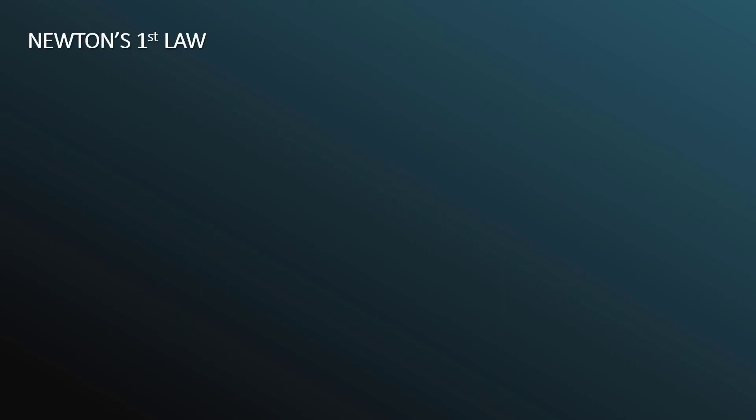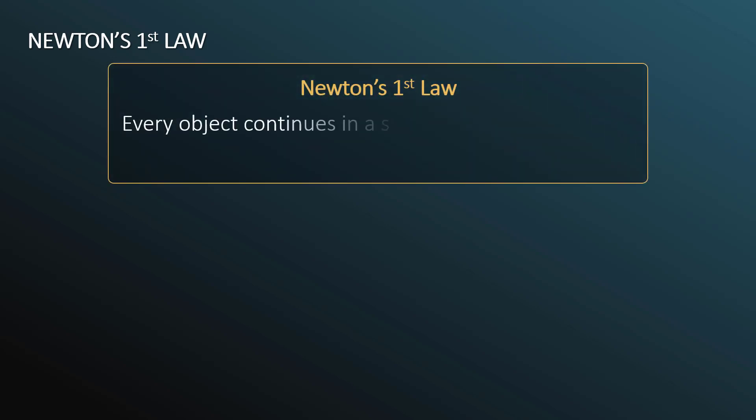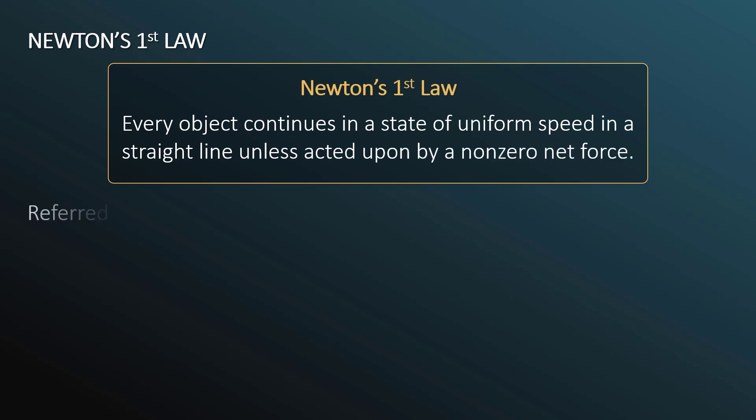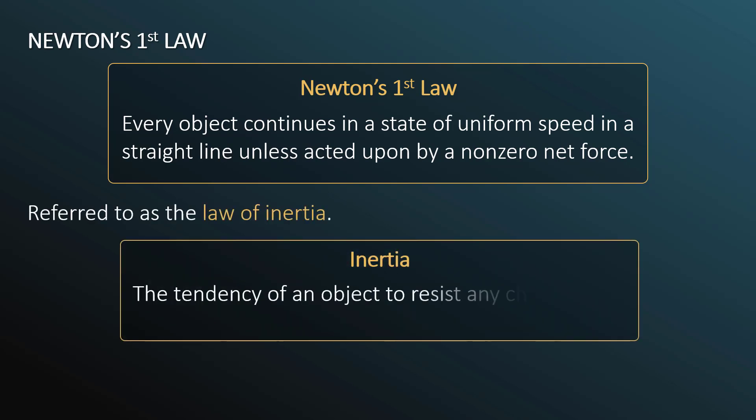Now let's talk about Newton's first law. Every object continues in a state of uniform speed in a straight line unless acted upon by a non-zero net force. This is referred to as the law of inertia. Inertia is the tendency of an object to resist any change to its state of motion.